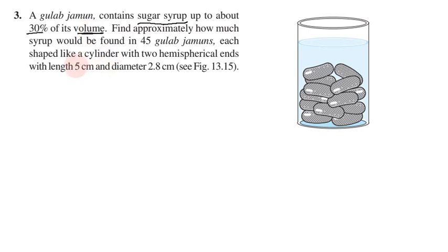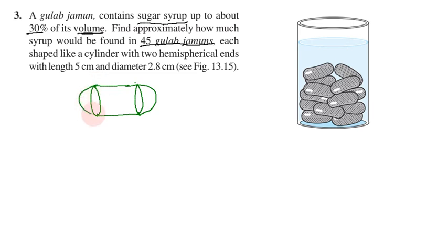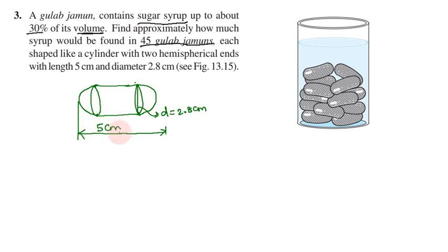Given: one globe jamun holds syrup equal to 30% of its volume. The diameter is 2.8 cm and the length is 5 cm. We need to calculate the total syrup amount in 45 globe jamuns.